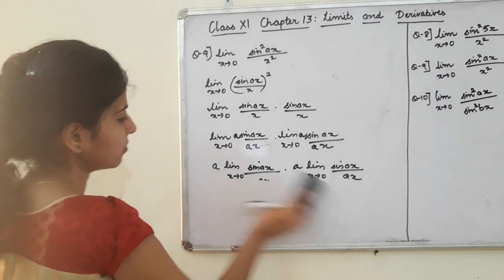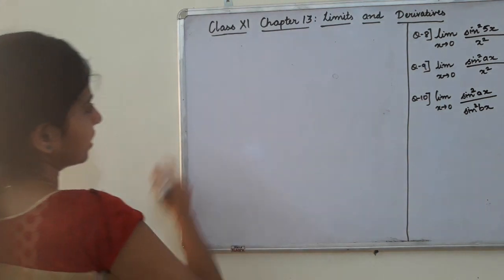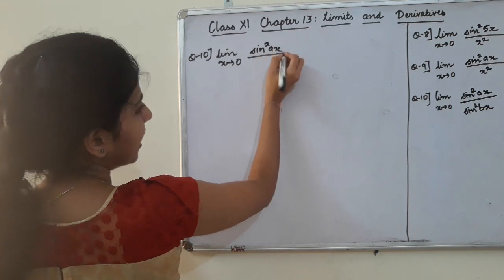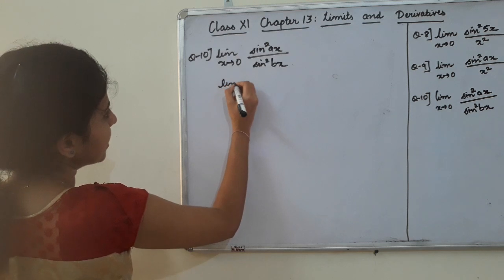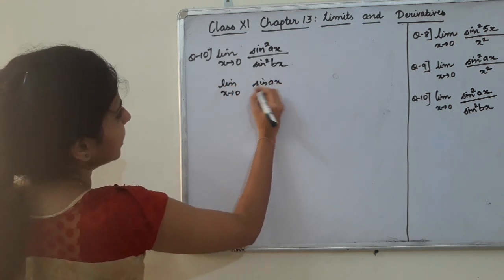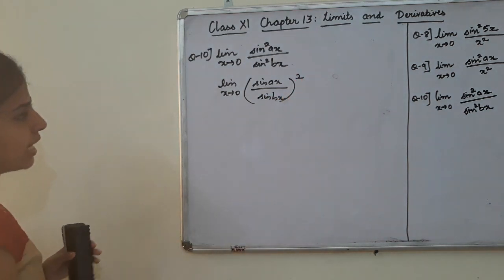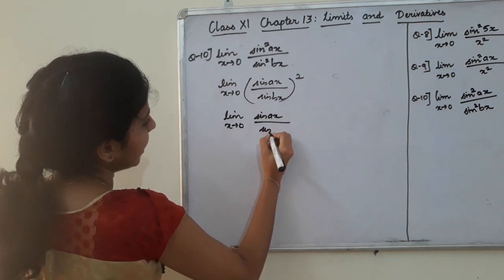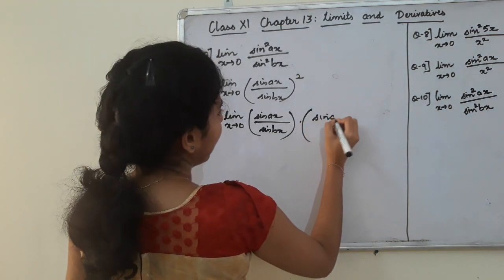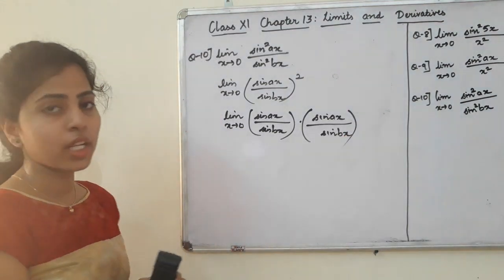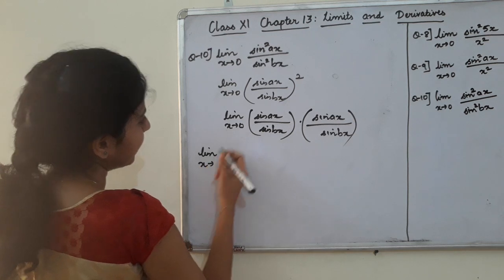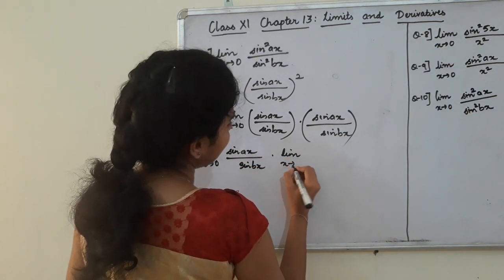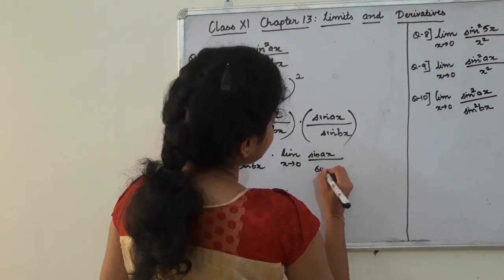Question number 10. Limit x tending to 0, sin squared ax divided by sin squared bx. Limit x tending to 0, sin ax divided by sin bx, in the whole square. Limit x tending to 0, sin ax divided by sin bx into limit x tending to 0, sin ax divided by sin bx.